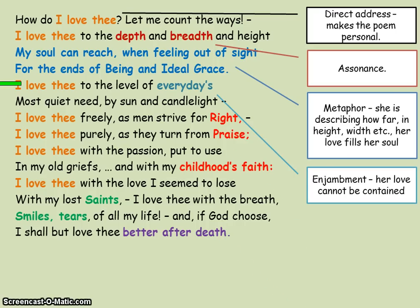Moving on, we've got enjambment. So that's just one example, but you can spot it throughout. This is where the line continues — it doesn't end right where the line does; it goes over it. We can see this enjambment helps to show us that her love cannot be contained. It runs over onto the next line. You could talk about this in terms of structure. Look at how she says she loves him by day and by candlelight at night — that's what that means: she loves him day and night. So we've got a theme of time here — how over an expanse of time she loves him.